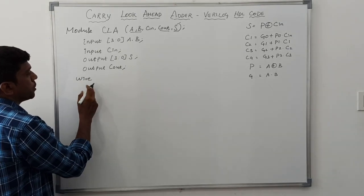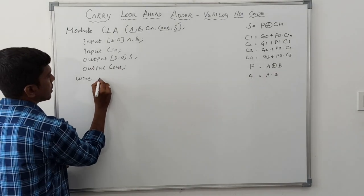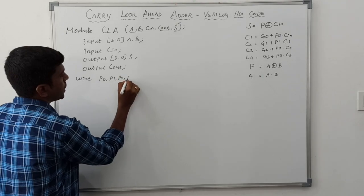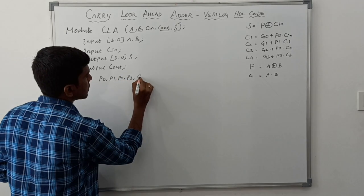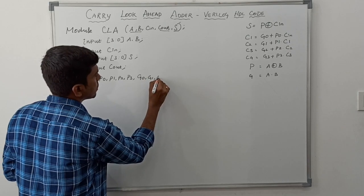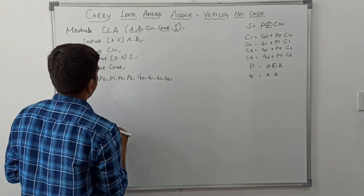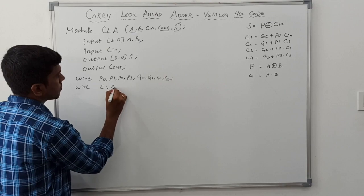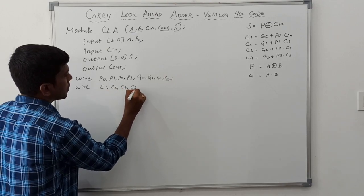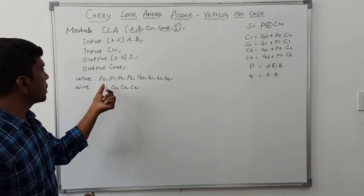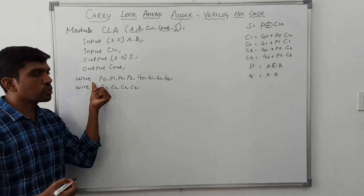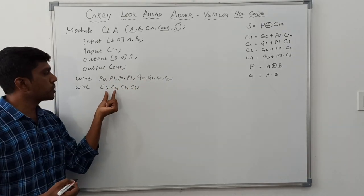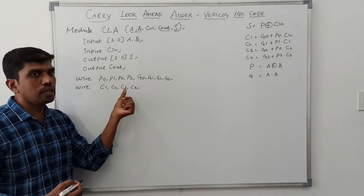In the block diagram we use two sets of wire signals. The first wire signals are the propagation signals: P0, P1, P2, P3. Then the generation signals: G0, G1, G2, G3. The second wire signal represents the carry lines: C1, C2, C3, C4.